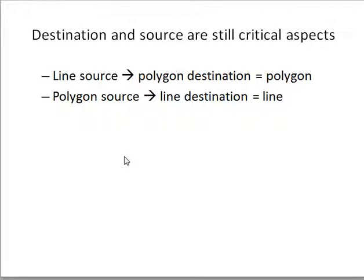One important rule: the destination and source matter greatly. Whatever your destination shape type is, that's what your output will be. If you start with a line and add point data, you end up with a line. If you start with a polygon and add line data, you still end up with a polygon. Whatever your destination is determines your output feature class type.